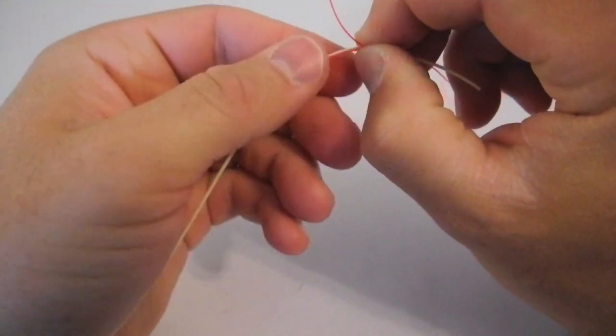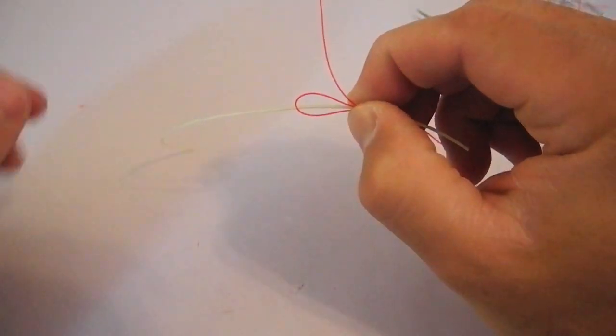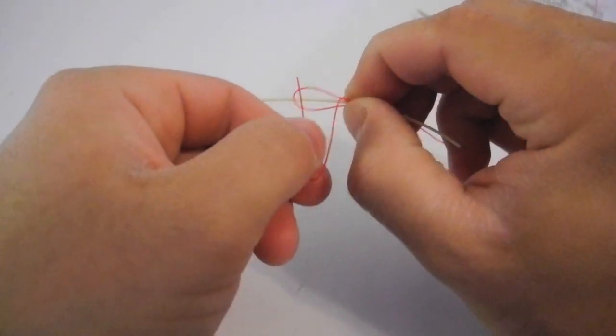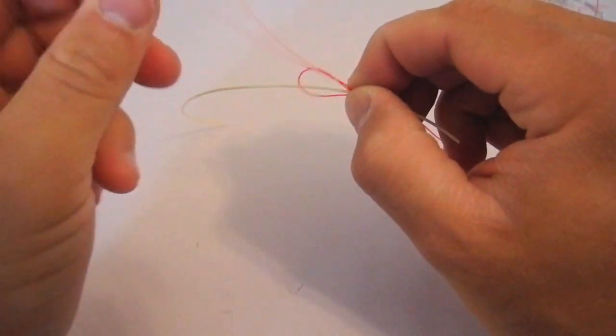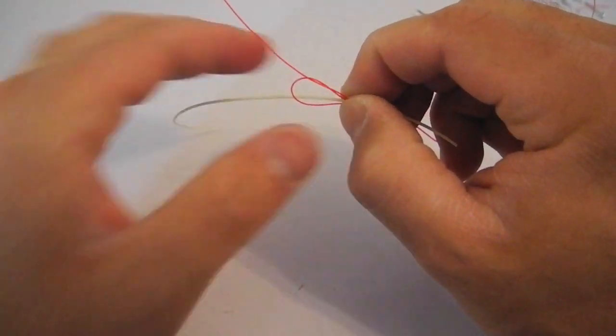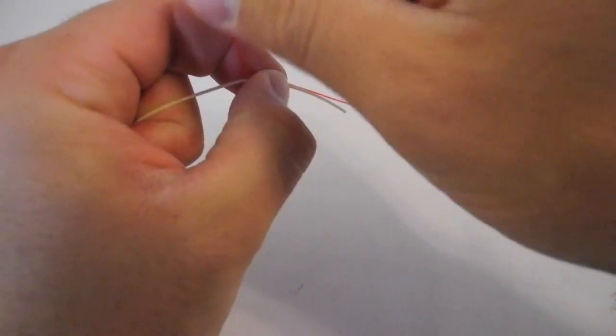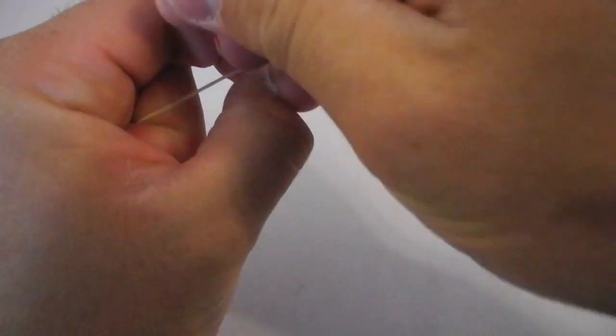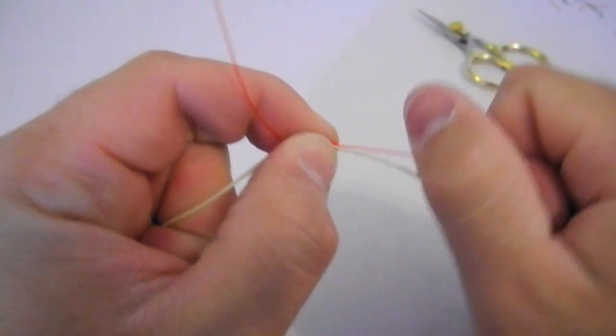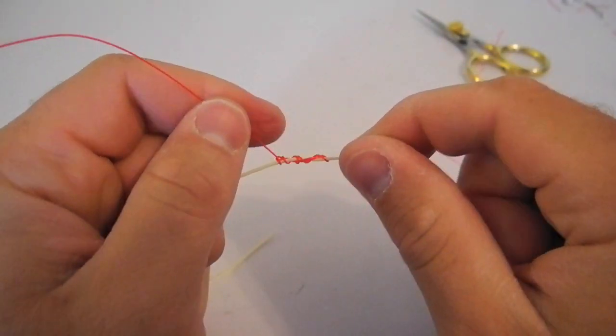Then what I'm going to do is just pinch it off, and I'm going to take the tag end and go through the loop that we made hanging off the back. And then all I'm going to do is just close that loop, just like so. Once I've closed that loop I can actually let go of everything.